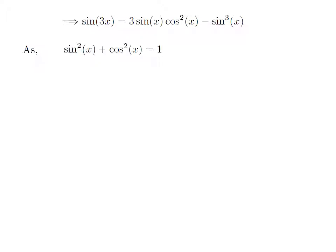Now, we know the famous identity: square of sine of x plus square of cosine of x is equal to 1. This implies square of cosine of x is equal to 1 minus square of sine of x.